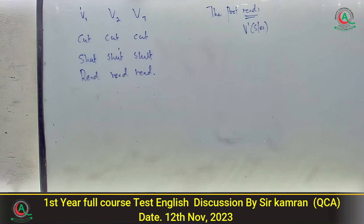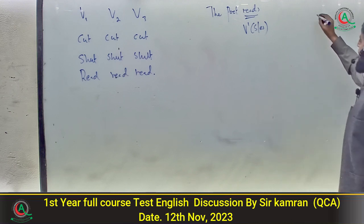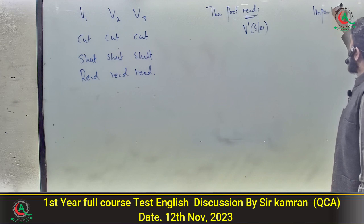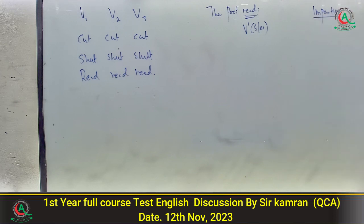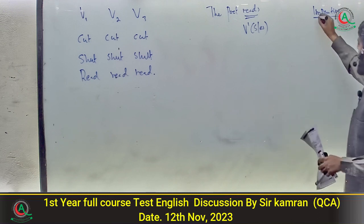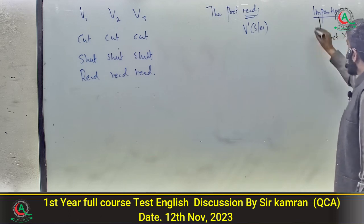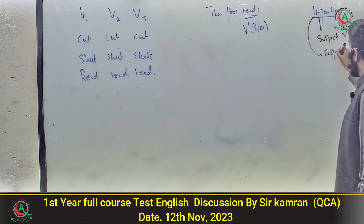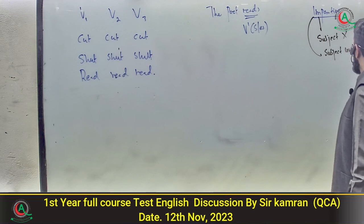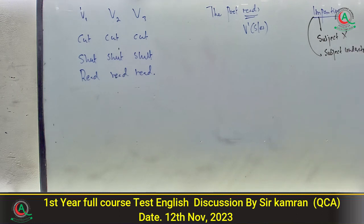Next: 'Do not make a noise۔' یہ imperative sentence ہے۔ Imperative وہ sentence ہوتا ہے جس میں order، advice، request، command، suggestion ہو۔ اس میں subject نہیں لکھتے کیونکہ subject understood ہوتا ہے — subject implicit ہے، explicit نہیں۔ مثلاً 'Stand up' کا مطلب ہے 'You stand up۔'